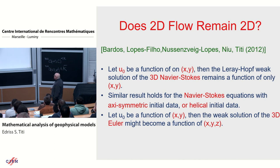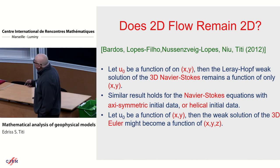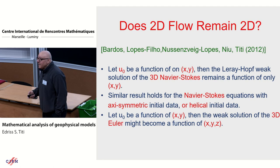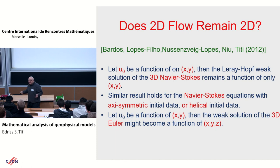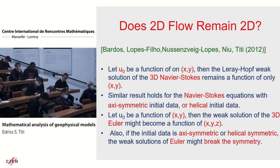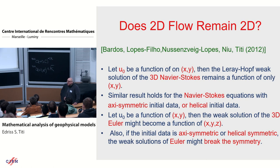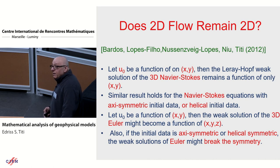In view of the convex integration machinery, all scenarios are open. Here is a result with Bardos, Lopez, Titi, and Nussenzweig: let u_0 be a function of x and y. Then the Leray-Hopf weak solution of 3D Navier-Stokes remains a function of x and y alone. We are saved by the bell. Weak solutions in general need not remain functions of x and y, but the one which dissipates energy — the Leray-Hopf solution — is the one that remains a function of x and y. So this ansatz in 2D Navier-Stokes, within the class of solutions of 3D Navier-Stokes, is the physically relevant one.